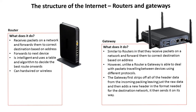A gateway is very similar to a router in many regards. The gateway receives packets on a network and it forwards them to the correct destination based on an address. However, unlike a router, a gateway is able to deal with packets travelling between devices using different protocols, and this is the part that is really important, especially for the internet.